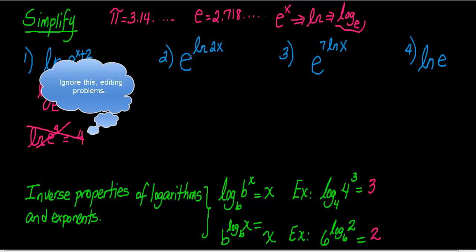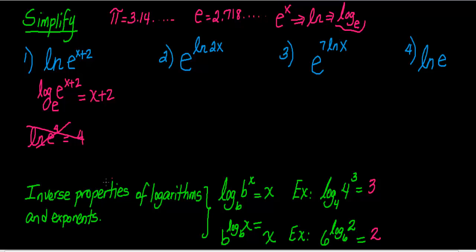Example 2: here I have E as a base and a natural log as the exponent, so I use the inverse property of exponents. As long as the base of the exponent is equal to the base of the logarithm, it will equal the argument. I have E to the natural log of 2x. You can rewrite natural log as log base E of 2x, and it's clear the base equals the base of the log, so this equals the argument, which is 2x.